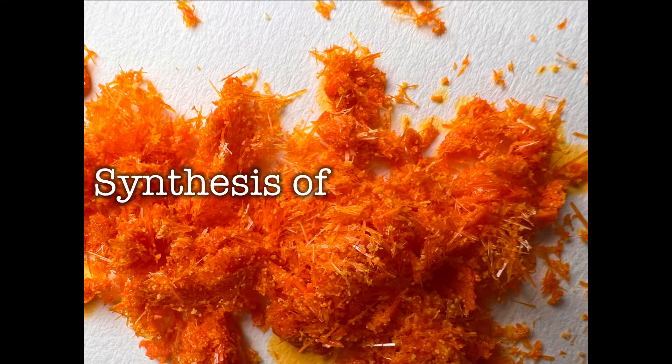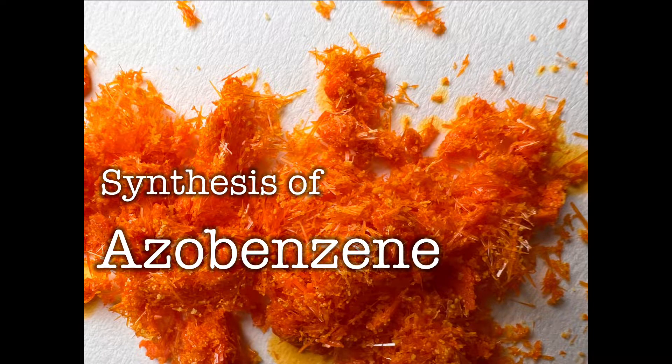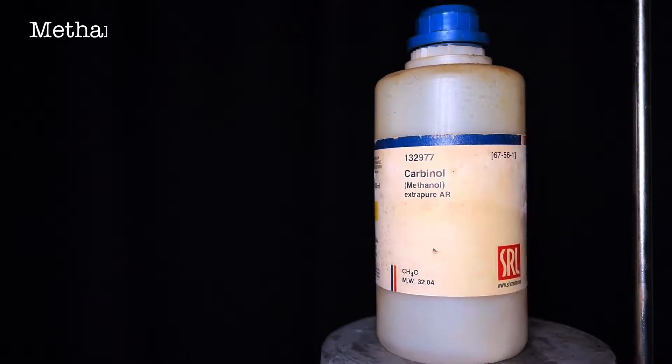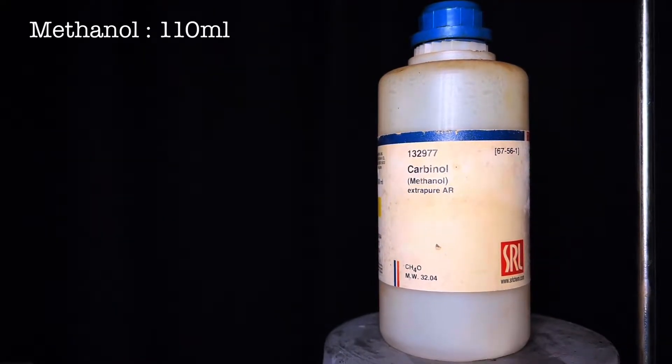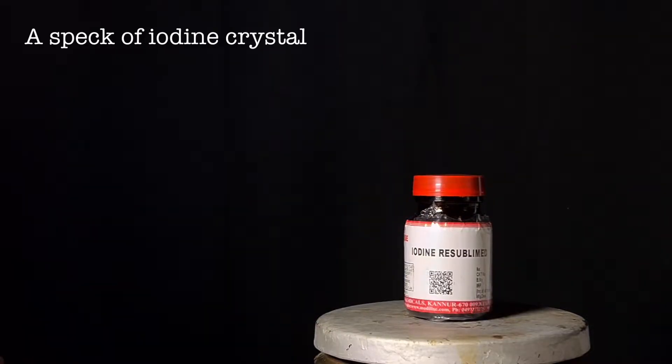Hello friends, in this video we will be synthesizing azobenzene by the reduction of nitrobenzene with magnesium metal. For this synthesis, we will need 6.2 grams of pure nitrobenzene, 110 ml of methanol, 6 grams of magnesium metal, and a small speck of iodine crystal.